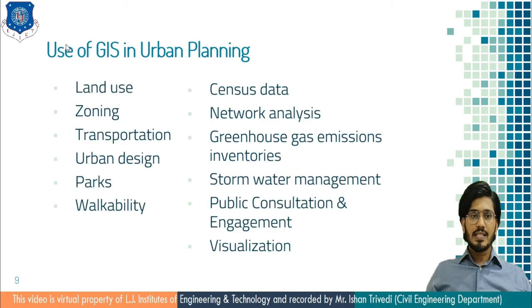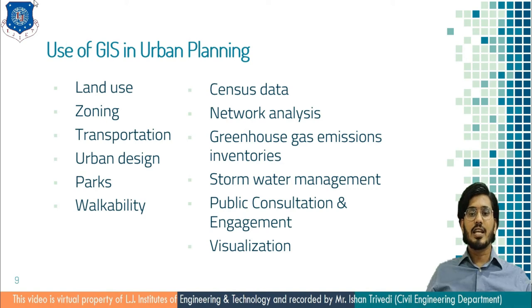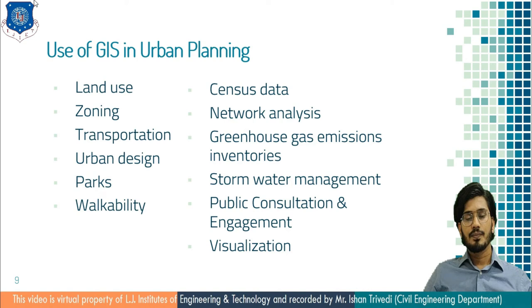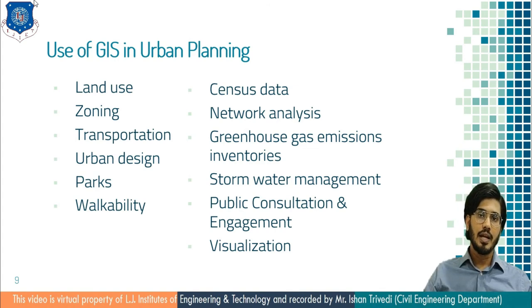The use of GIS in urban planning covers these sectors: land use, zoning, transportation, urban design, parks, walkability, census data, network analysis, greenhouse gas emission inventories, stormwater management, public consultation and engagement, and visualization at each scale of planning. There are different stages at each scale, including analysis of existing situation, modeling and projection, resource inventory, development of planning options, selection of planning options, plan implementation, plan evaluation, and feedback.